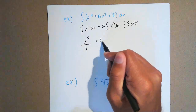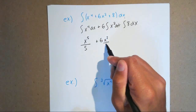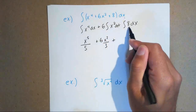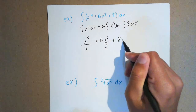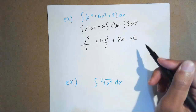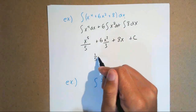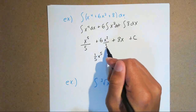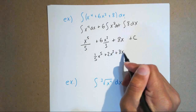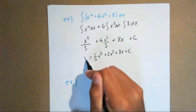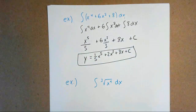For the 6x squared term, take the constant 6 out, add 1 to the exponent to get 3, divide by that new exponent 3. For the constant 8, just add the variable: 8x. Simplifying: 1/5 x to the 5th, 6 over 3 gives 2x cubed, plus 8x, plus C. This equals y, your original equation. Remember, you can find the derivative to check if you did it right.